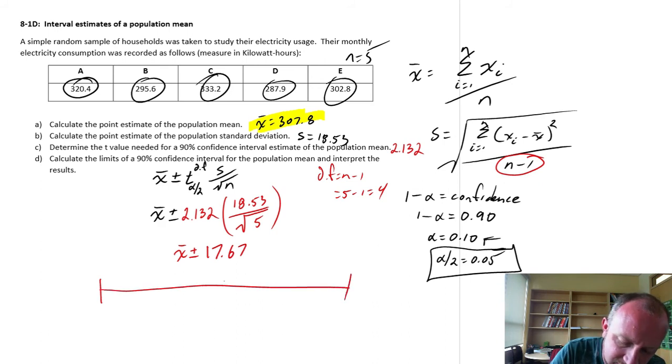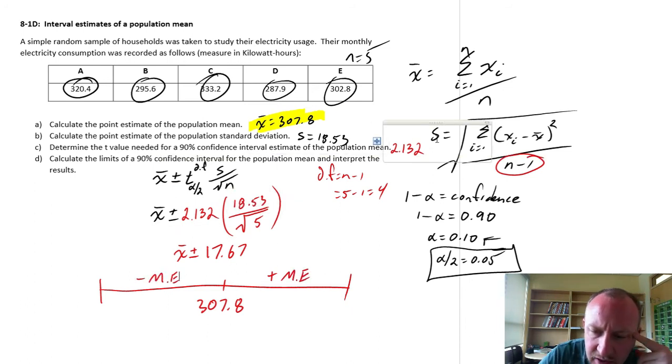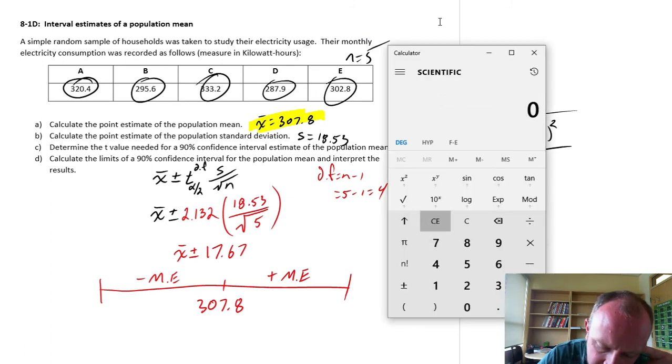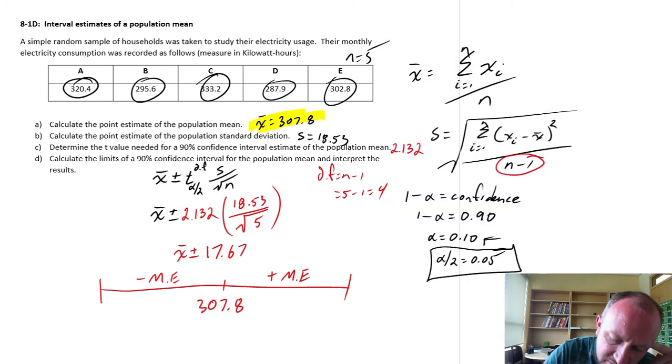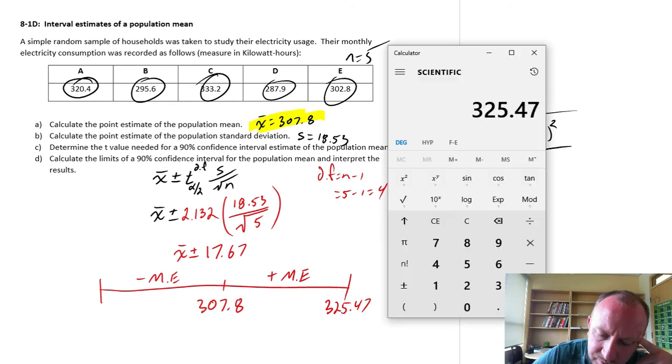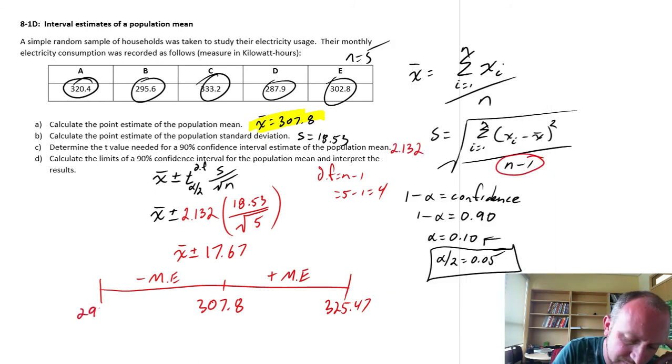So we have our point estimate. Point estimate was 307.8. And this is plus one margin of error. This is minus one margin of error. So if we get our calculator out again. 307.8 was our mean plus 17.67, so 325.47. And lastly, 307.8 minus 17.67, 290.13. And there we have it. There's our answer for part D.